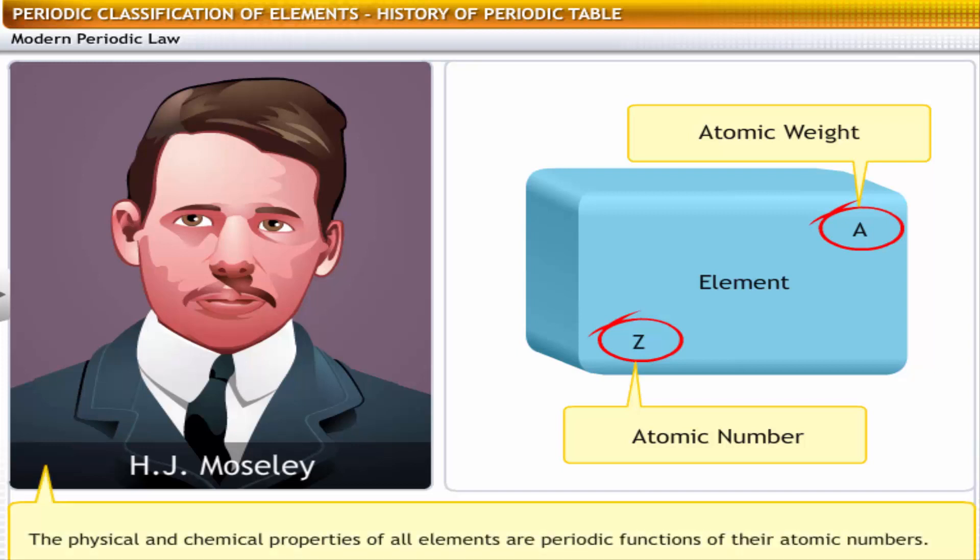The modern periodic law states, the physical and chemical properties of all elements are periodic functions of their atomic numbers. The modern periodic law has become the universally accepted form of classification of elements as it does not suffer from the demerits of Mendeleev's periodic table.